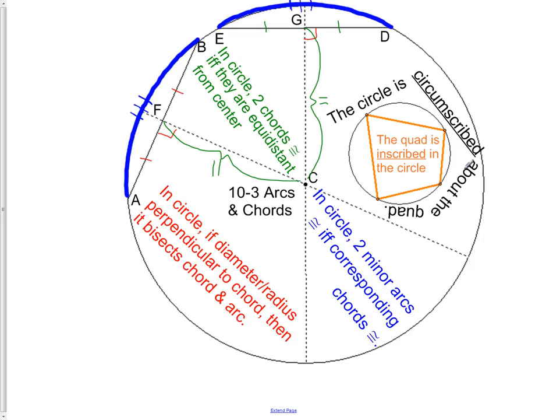Lastly, it's just two words that you may have not heard before. The first is inscribed. You'll notice it right here inside of this quadrilateral. A quadrilateral is inscribed in the circle, meaning the quadrilateral is completely inside the circle.